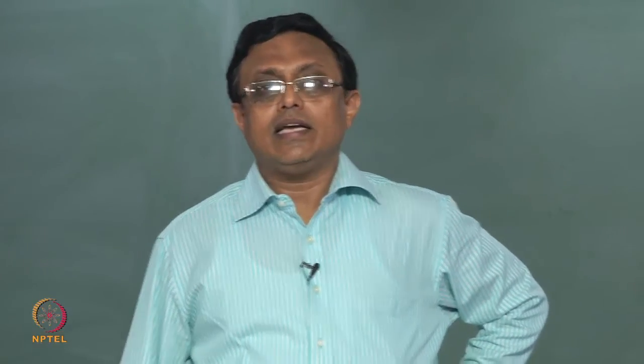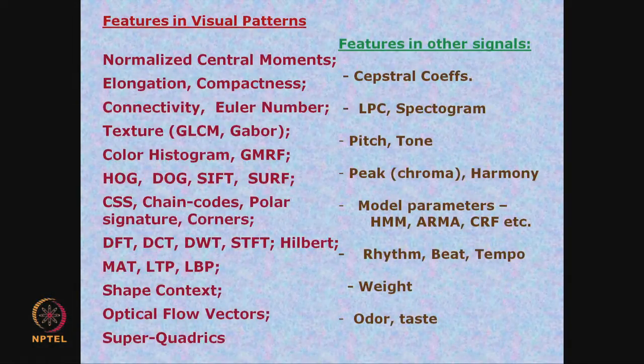Pattern recognition also applies to non-visual signals. For audio, music, and speech, features include cepstral coefficients, LPC (linear predictive coefficients), spectrogram, speech tone, peak, chroma, and harmony. Model parameters usable for visual or non-visual signals include HMM (hidden Markov model), ARMA (auto-regressive moving average), and CRF (conditional random field). Features like rhythm, beat, and tempo are extracted from music. Other features like PCA features, LDA, and ICA features will be discussed as the course progresses.